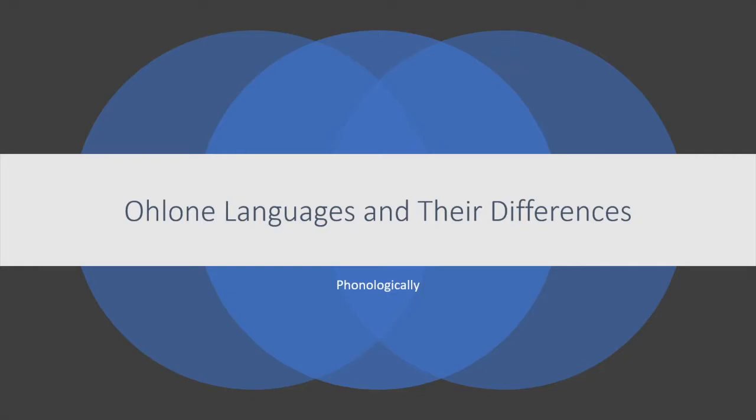Inka to makam — that's how you say 'How are all of you' in Rumsen, which is one of the Ohlone languages. This video will be looking more specifically at all eight of the Ohlone languages and how they are each similar and different from each other, but only in terms of phonology — not grammar or word structure, just the sounds.